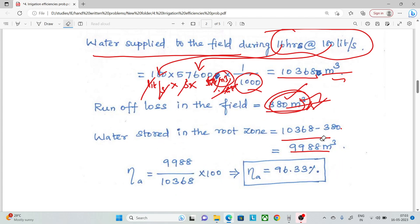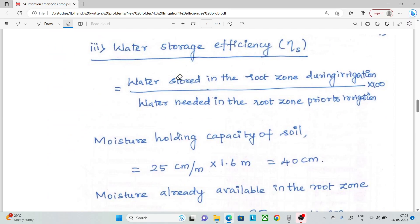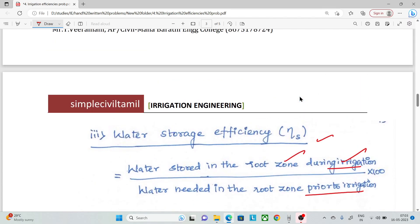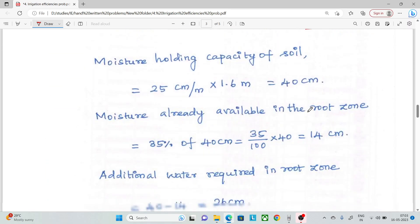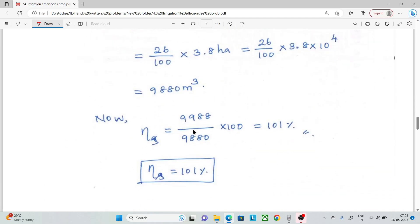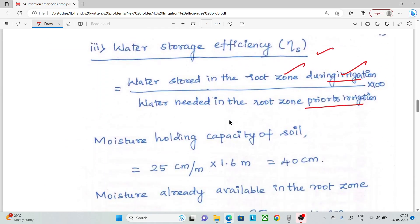Next is water storage efficiency. Water needed in the root zone during irrigation, and water stored in the root zone during irrigation. What is stored in the root zone is 9,988. We need to calculate water needed in the root zone.